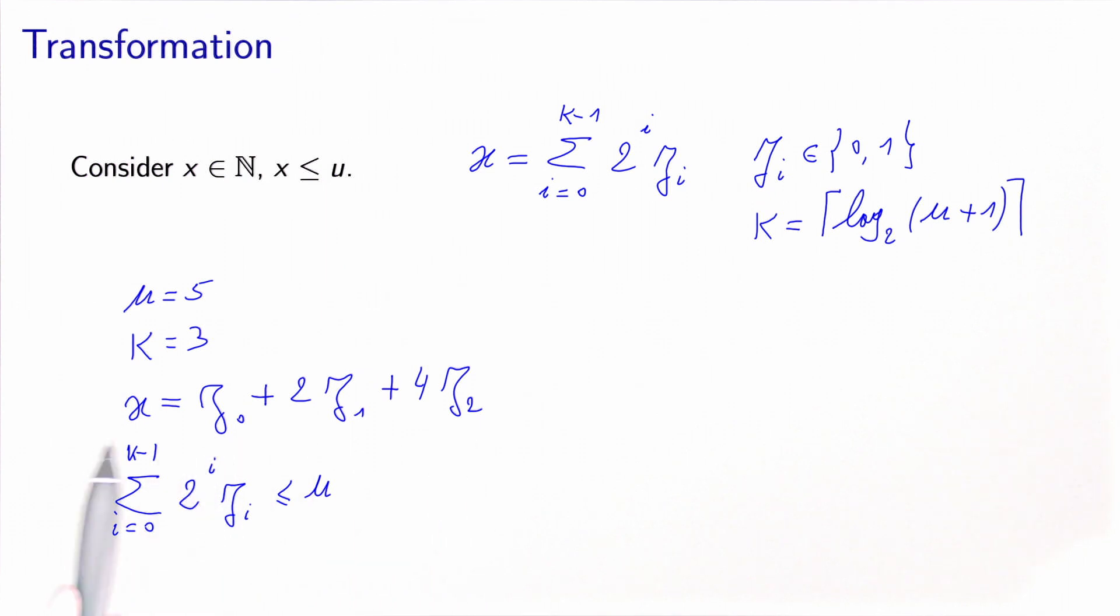If all the variables z are 0, x equals 0. If z2 equals 1, we get higher values, and so on. So we can actually get all the values that we need.